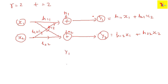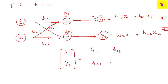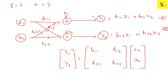In matrix format we can write this as a linear equation system. In the 2×2 case the channel matrix is: [h11, h12; h21, h22] multiplied by [x1; x2], plus noise vector [n1; n2].